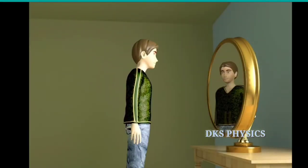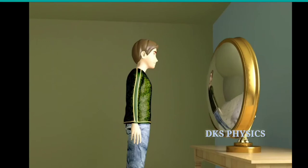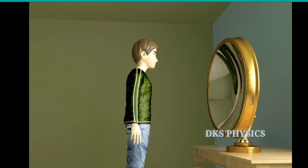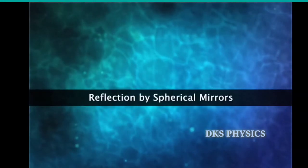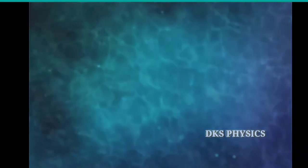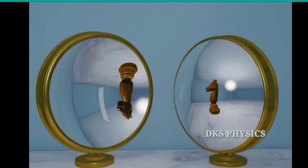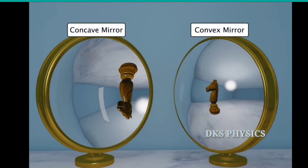After studying reflection by plane mirrors, we consider what happens if a plane mirror is curved outward or inward. To find the answer, we will study the reflection by concave and convex mirrors at various distances from the mirrors, and also study the characteristics of the image formed.